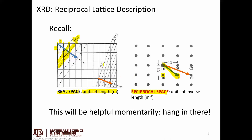Similarly, if I think about the family of 1-2 planes, their D spacing is somewhat smaller, so in reciprocal space the distance from the origin to the 1-2 point is proportional to 1 over that D spacing, meaning that reciprocal space length is larger. We're going to talk about how we construct reciprocal lattices and then how we use them. Hopefully it will become clear towards the end of this video — you might need to watch it a second time. The reciprocal lattice is basically a way to look at and interpret diffraction data.